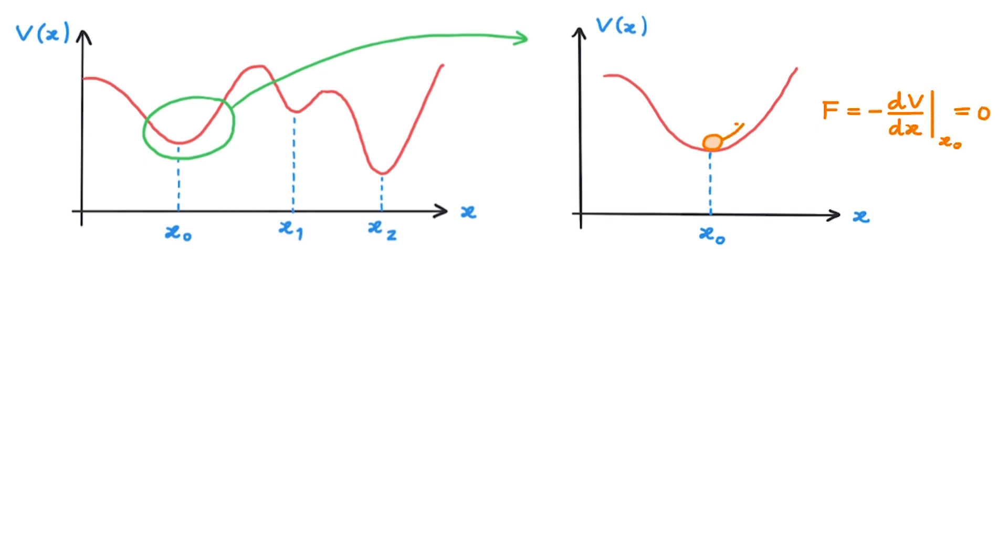If we now displace the particle away from the minimum but insist that this displacement is small we can approximate the general potential V about the minimum x0 using a Taylor expansion. It is given by the value of the potential at the minimum, then we have the first order term, the second order term, the third order term, and so on.